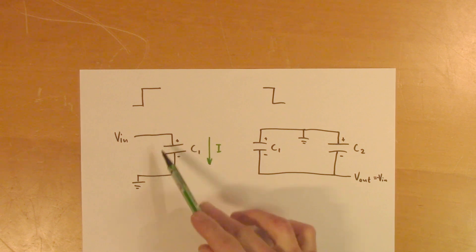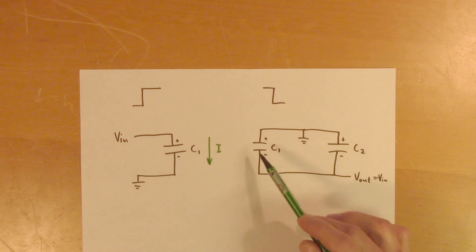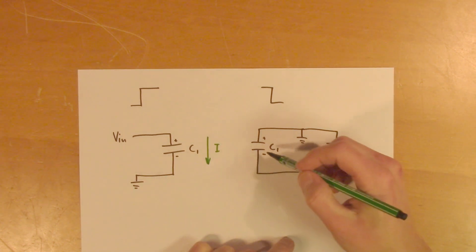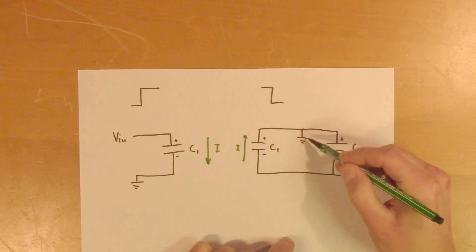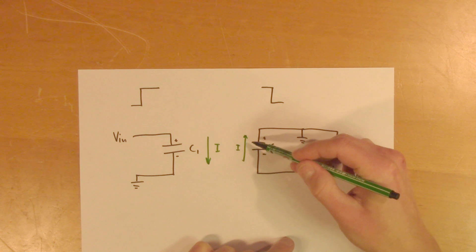This is the same capacitor as this one. So this one is charged, and it wants to transfer the charge to C2. So what happens is that this capacitor will discharge to ground.